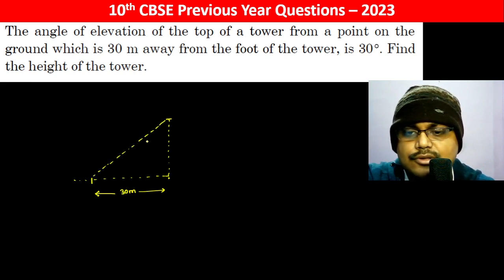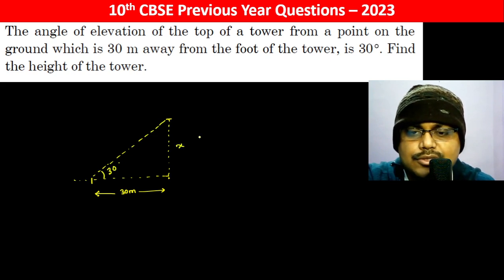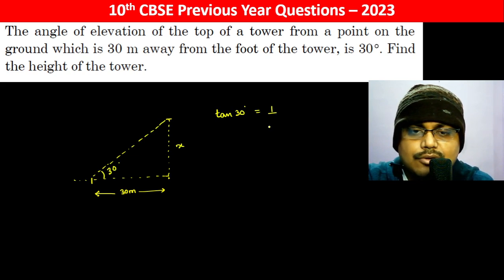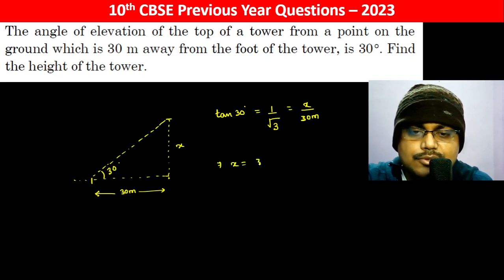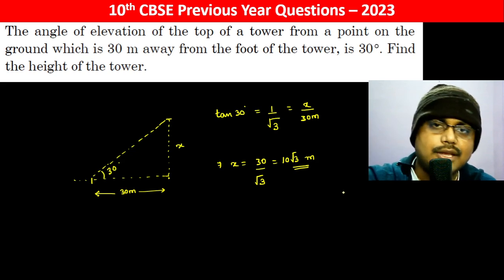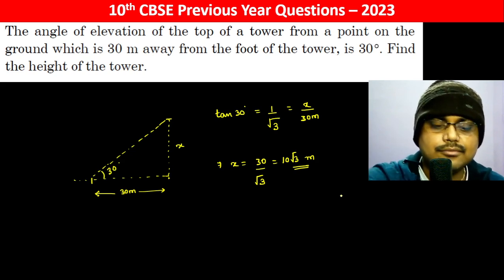Find the height of the tower. Let the height be x. So tan 30° = 1/√3 = x/30 meters. Therefore x = 30/√3, which equals 10√3 meters. This is the height of the tower.